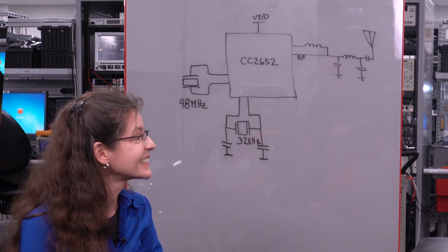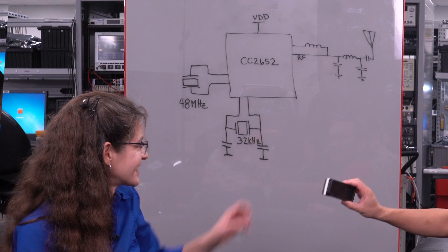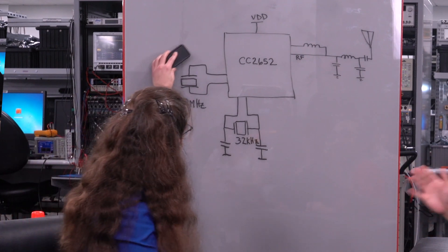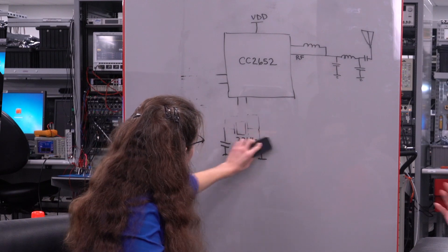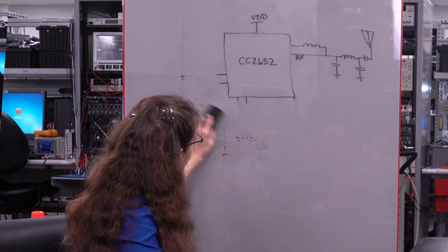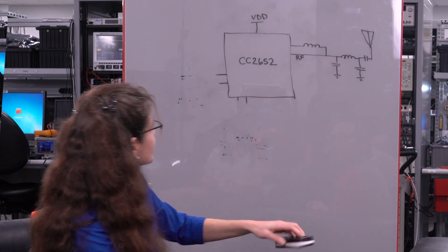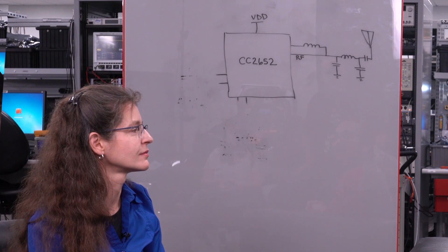We have a dry erase marker here, so maybe just erase the parts that are now integrated into our latest sampling products. So that's being replaced — yes. It's a much simpler design now for our developers. And where can customers go to learn more about these BAW-integrated devices? The released product is named CC2652 and is on the TI.com website.